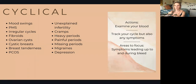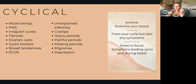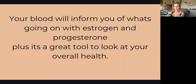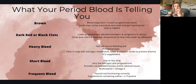Are you cramping, craving? Most cycle tracking apps have symptom lists you can track. Know your symptoms leading up to your bleed. Look at your blood, poop, and urine color — all accessible ways to know what's going on. Specifically, your period blood will tell you what's going on with estrogen and progesterone.